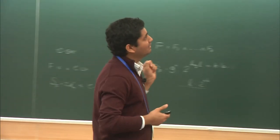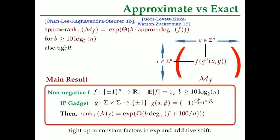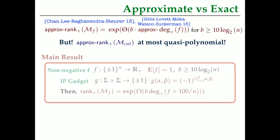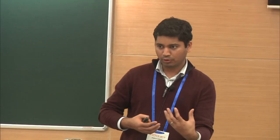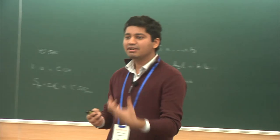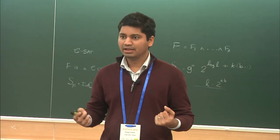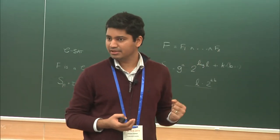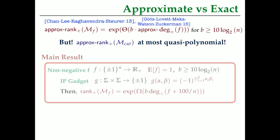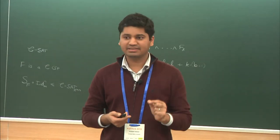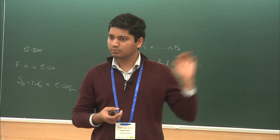They actually related the approximate non-negative rank of the pattern matrix M sub F to the approximate non-negative degree of the function F. Up to approximation thrown in, they basically had the same kind of lifting theorem, and their lifting theorem is also tight. But the M-cut matrix has high non-negative rank but at most quasi-polynomial approximate non-negative rank. So any lower bound technique that proves a non-negative rank lower bound by actually lower bounding the approximate non-negative rank will never manage to prove better than a quasi-polynomial lower bound. That's kind of what was happening in the previous works.